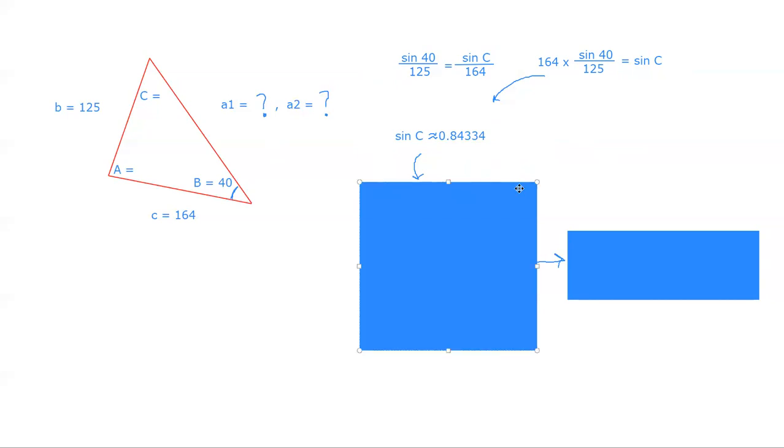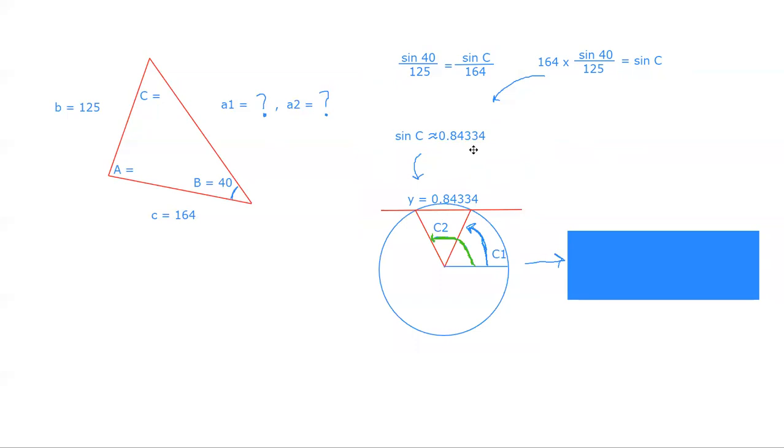But this one's a little bit tricky because 0.84334 as you can see is right here on the y-axis. So I drew this horizontal line at that height, you can see that there are two angles in the first 180 degrees of the circle that give us that. And those are the two angles that could be allowed for this triangle. You can see here with B being 40 degrees being acute, we can have both of these possibilities.